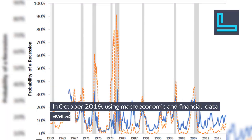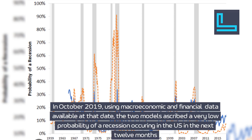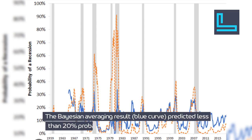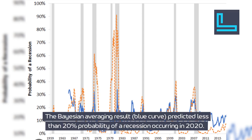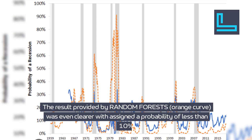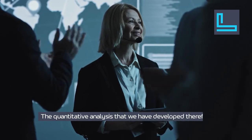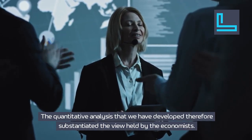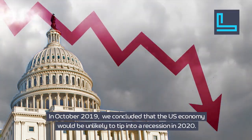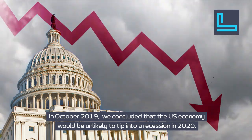In October 2019, using macroeconomic and financial data available at that date, the two models ascribed a very low probability of a recession occurring in the U.S. in the next 12 months. The Bayesian averaging result — the blue curve — predicted less than 20% probability of a recession occurring in 2020. The result provided by random forests — the orange curve — was even clearer, assigning a probability of less than 10%. The quantitative analysis therefore substantiated the economists' view: we concluded that the U.S. economy would be unlikely to tip into a recession in 2020.